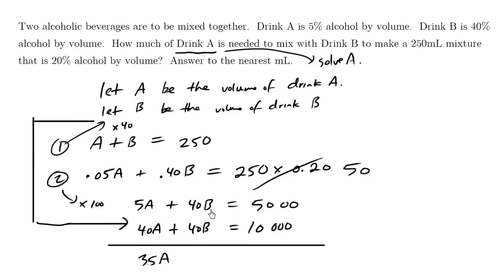And then 40B minus 40B disappears equals 10,000 minus 5,000 is 5,000. Divide both sides by 35. We get A equals 142.9.